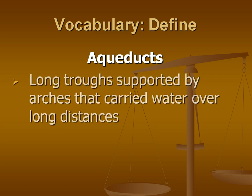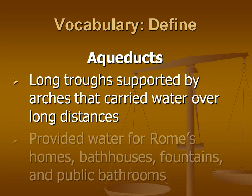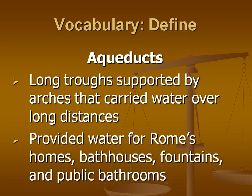And once again, as a review, aqueducts were these long troughs supported by arches that carried water over long distances and enabled Rome to have a water supply for its city. They provided water for Rome's homes, bathhouses, fountains, and public bathrooms.